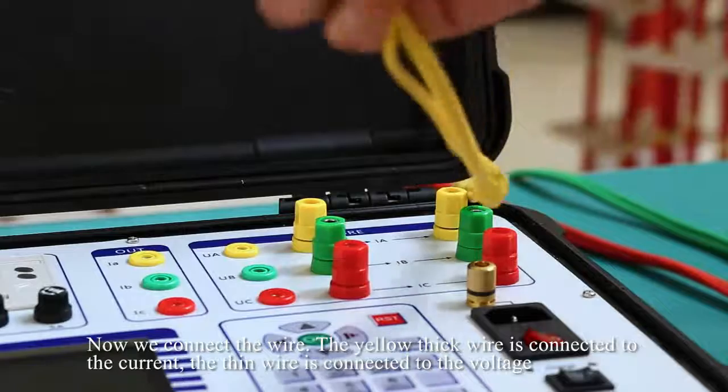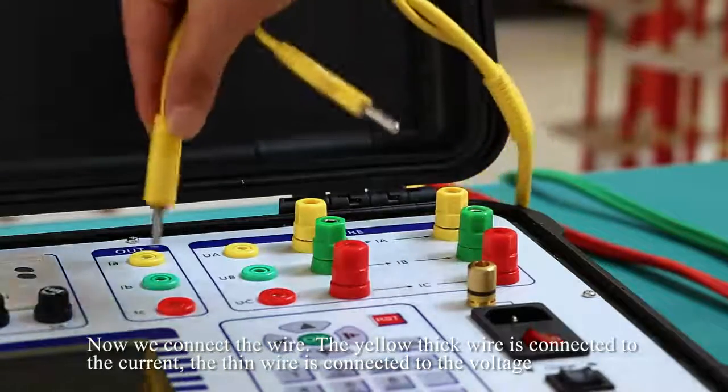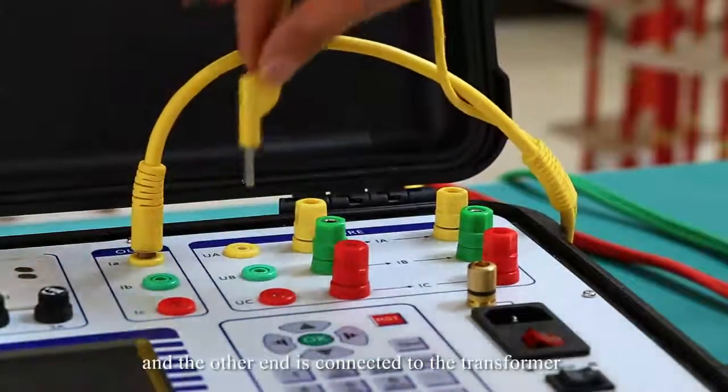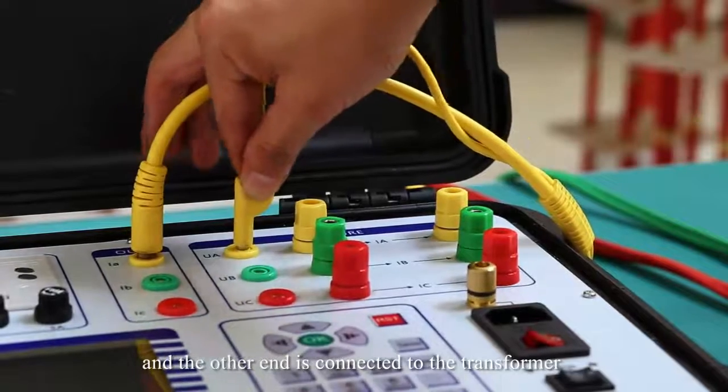The yellow thick wire is connected to the current. The thin wire is connected to the voltage, and the other end is connected to the transformer.